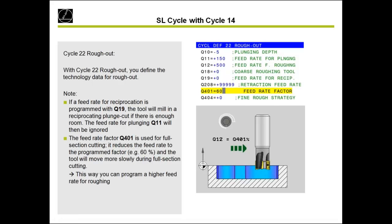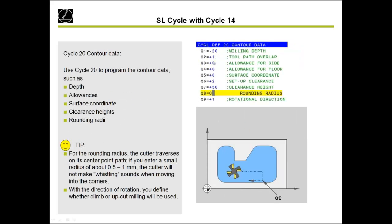The important cycle is cycle 22 for roughing. In this cycle, you define the plunging depth, the feed rates, how to enter the contour, and the feed rate factor. With the feed rate factor, you can tell the control to reduce the programmed feed rate to 60% during a full-cut pass, protecting the tool from damage. After the full cut, the tool continues with the defined tool pass overlap from cycle 20.